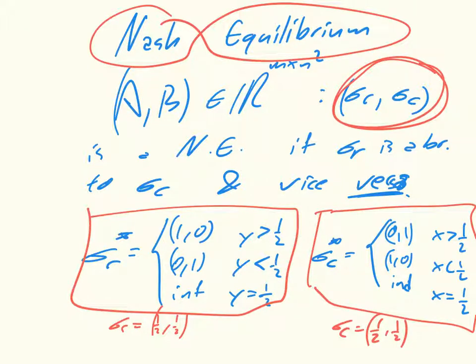then neither player has a reason to move. Right? Because if I'm looking at (a half, a half), and I know that sigma C is equal to (a half, a half), I come down here and I say, does player 1 have a reason to move? And the answer is, well, y is equal to a half, so no.